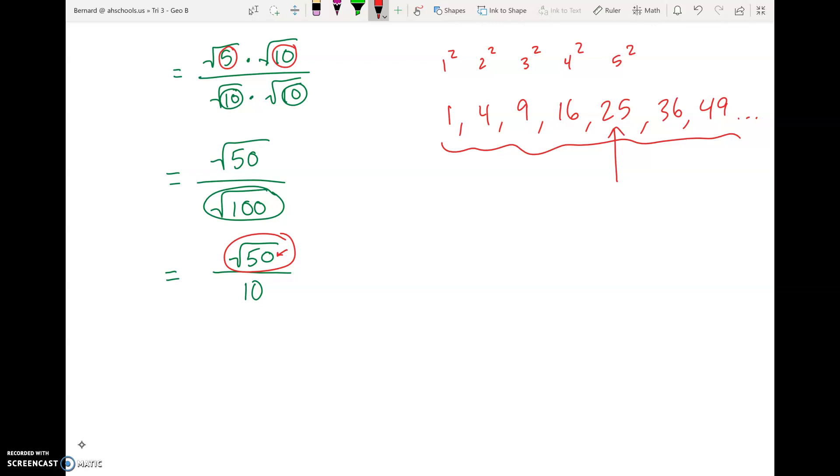I think what we'll find is it's 25. 25 times 2 gives us 50. And so we can rewrite the top of that fraction as square root of 25 times the square root of 2. And the bottom of the fraction is still 10.